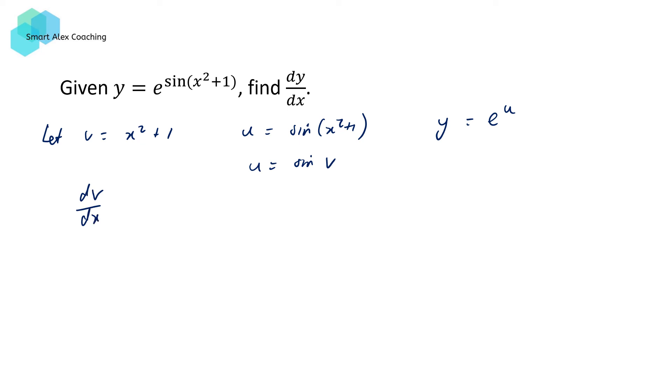Now, we're going to differentiate each variable separately. dv/dx is going to be equal to 2x. du/dv is going to be equal to cos v. And dy/du is going to be equal to e^u. Now, dy/dx can be written as a product of dy/du times du/dv times dv/dx. And you can see that the du's and the dv's will cancel out.